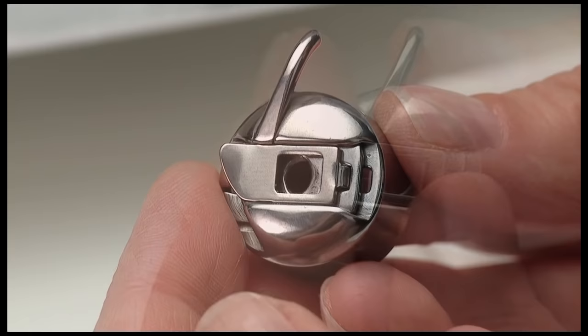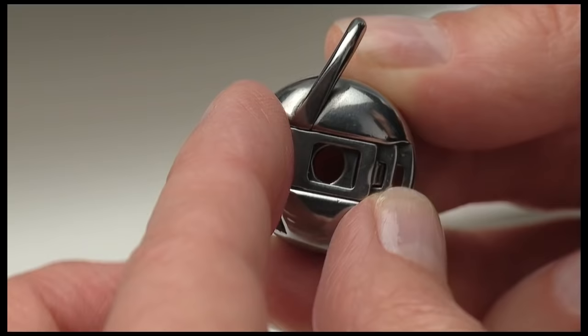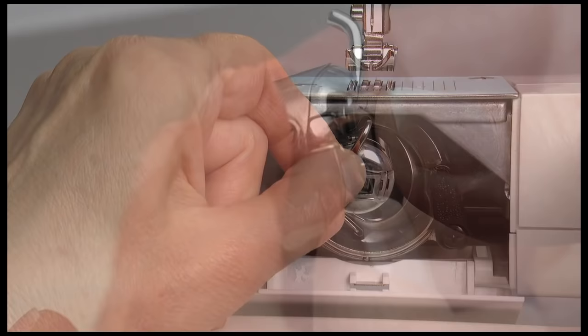This bobbin case is for machines designed to use front-loading bobbins. The bobbin case has a hinged latch on the outside. This latch is used for inserting and removing the bobbin case from the machine.